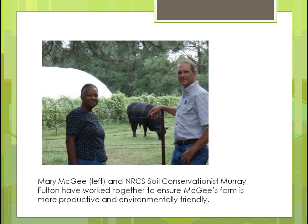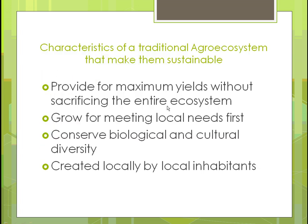Here's an example of a soil conservationist working with a woman trying to become more environmentally friendly. You can tell right away she has a hoop house, which extends her growing season, and an animal in a pasture — a really sustainable approach. It's a pretty good guess, and in fact confirmed, that this is a small organic farm in the southeast of the United States.